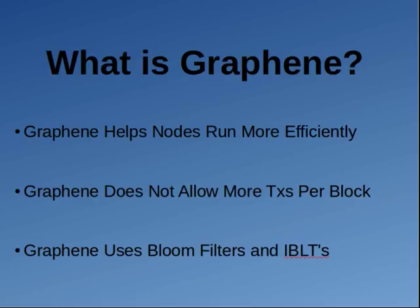The way that graphene works is it uses two technologies — two protocols — called Bloom Filters and IBLTs, for people who are more interested in computer science. Some of you might actually be computer science graduates and might know more about this than me. I'm just trying to explain this to the layman here.